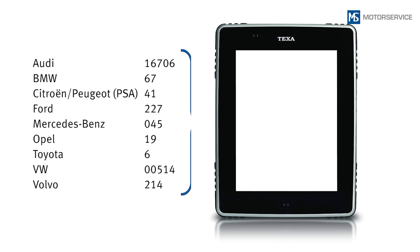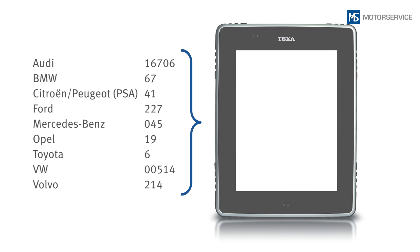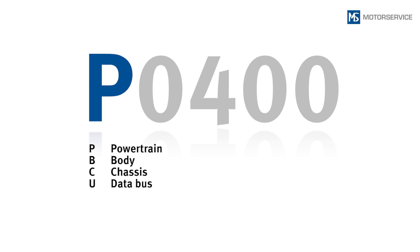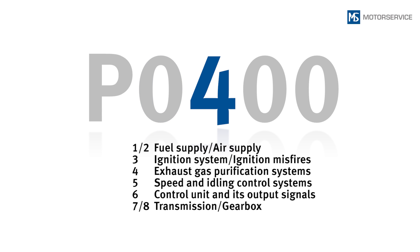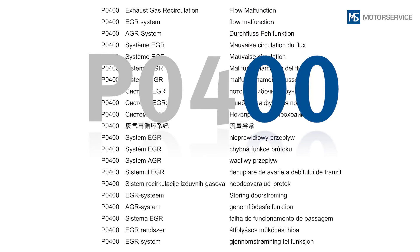With the introduction of OBD, the various DTCs used by individual vehicle manufacturers for just one error were replaced by standardized DTCs. The first letter indicates the area in which the error has occurred. Errors on components related to emission control are indicated by a P for powertrain. A zero in the second position indicates the standardized DTCs independent of the manufacturers. The third position indicates the assembly group of the error. The last two digits stand for the detected component and the type of error. The wording of the text used for a DTC may vary depending on the scan tool manufacturer.